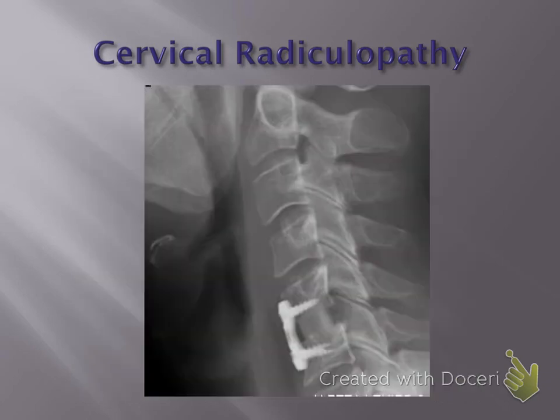The surgical intervention for cervical radiculopathy is usually reserved for severe or unrelenting cases. A lot of times, especially with younger patients, a cervical radiculopathy due to a bulged or herniated disc is going to resolve with time and conservative treatment — such as NSAIDs, pain medications, physical therapy, rest, time off work if needed, and oftentimes something like a steroid Medrol dose pack can really help these patients.